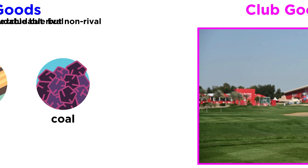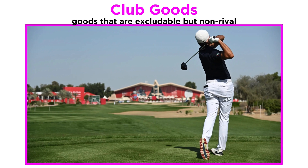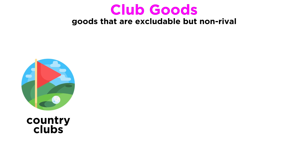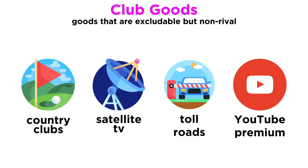And finally, club goods are those that are excludable but non-rival. We can be prevented from using them, but their consumption does not reduce their availability to others. Club goods are sometimes referred to as artificially scarce resources, and examples include country club memberships, satellite TV, toll roads, or even a YouTube Premium subscription.